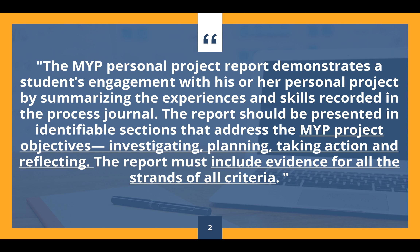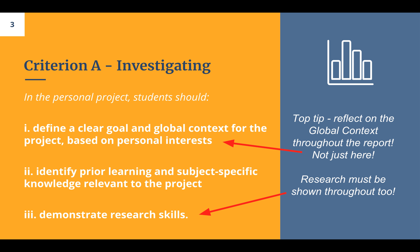I'm going to dive straight in and show you the layout — it's going to look super familiar. You're going to start with Criterion A, Investigating. The best way to do it is to write a paragraph or two for each strand with evidence. Make sure you keep the strands as subtitles — you can remove them later if you want. You'll probably write way over the word count and then edit it down, so make sure you don't accidentally edit out everything for a specific strand.